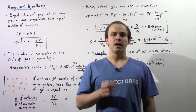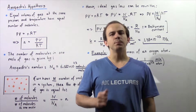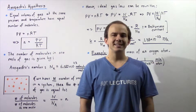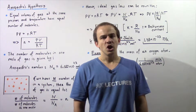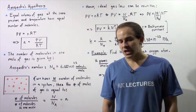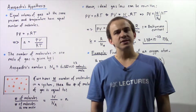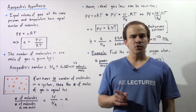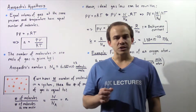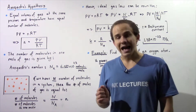Let us briefly look at Avogadro's hypothesis and the Boltzmann constant. So what exactly is Avogadro's hypothesis? It essentially states that equal volumes of gases at the same exact pressure and temperature have equal number of molecules, equal number of atoms.